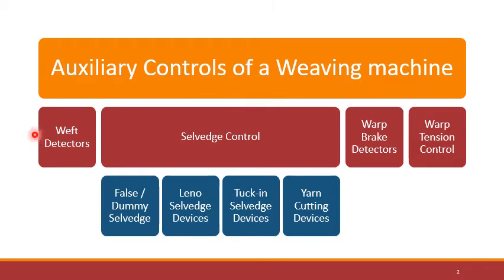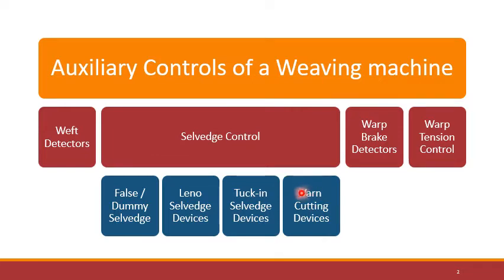First of all we will talk about the warp detectors — what types of different warp detectors are available, especially on air jet weaving machines, and how they work. Then we will talk about the different types of salvage controls. We will see what the dummy salvage is, and then we will talk about individual types of salvage forming devices — for example, inner salvage, Tekken salvage, and how the different types of yarn cutters work.